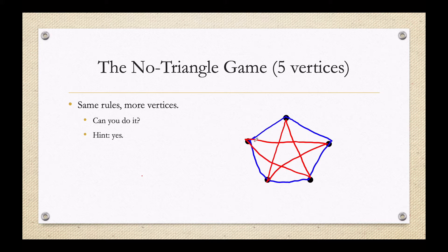You don't have any triangles using these vertices — this is one of the many different ways you can win the no triangle game on five vertices.